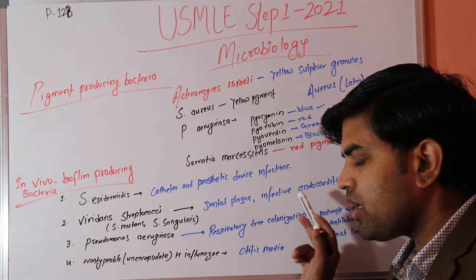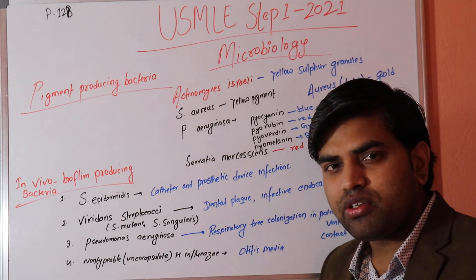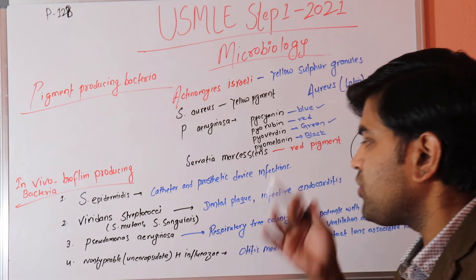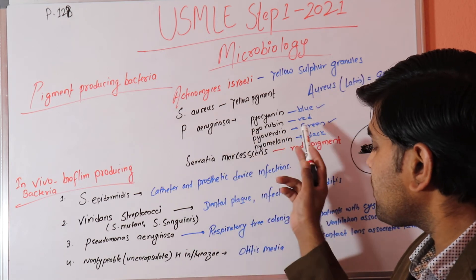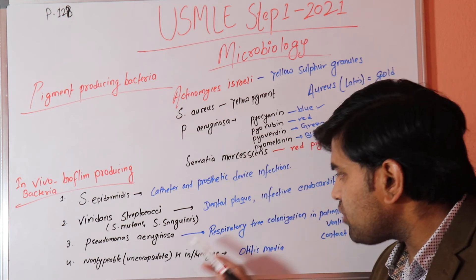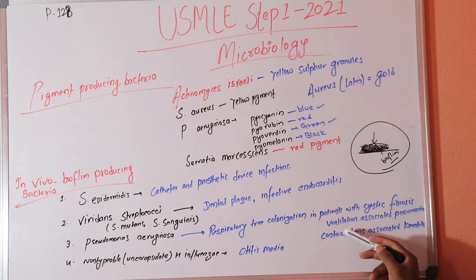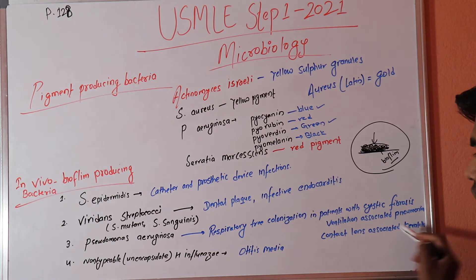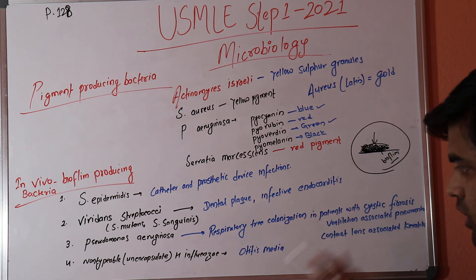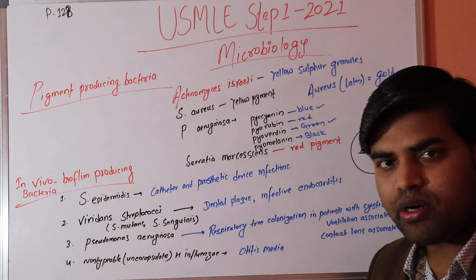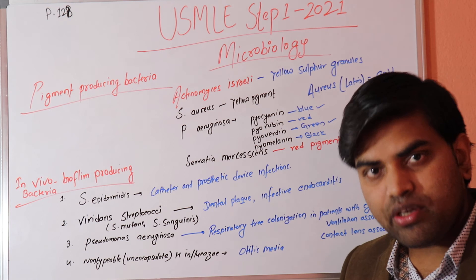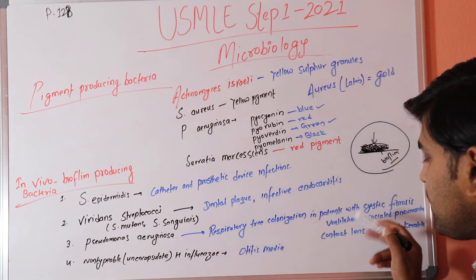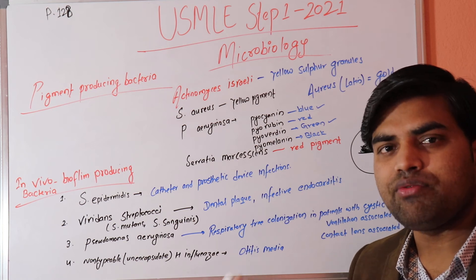Pseudomonas aeruginosa is a gram-negative, oxidase-positive, pigment-producing bacterium we've already discussed. Regarding biofilm, Pseudomonas causes respiratory tract colonization and biofilm formation in cystic fibrosis patients, ventilator-associated pneumonia, and contact lens-associated keratitis. In cystic fibrosis patients and ventilated patients, biofilm makes Pseudomonas pneumonia very difficult to eradicate.